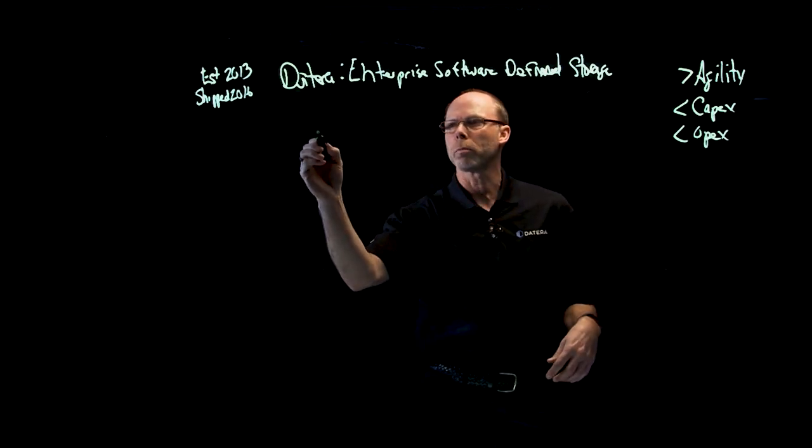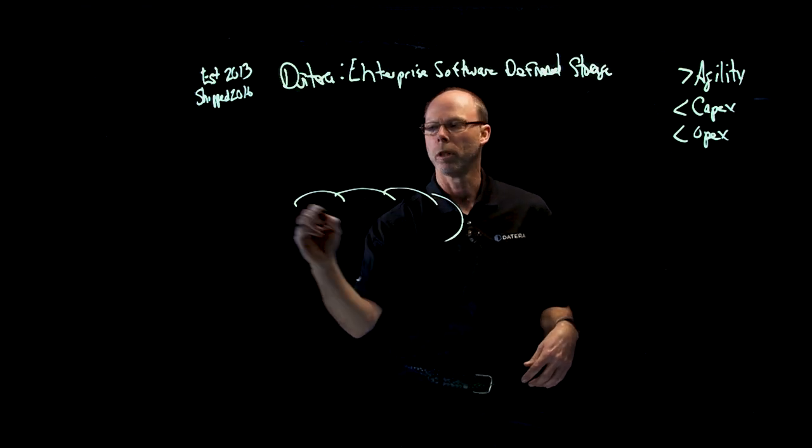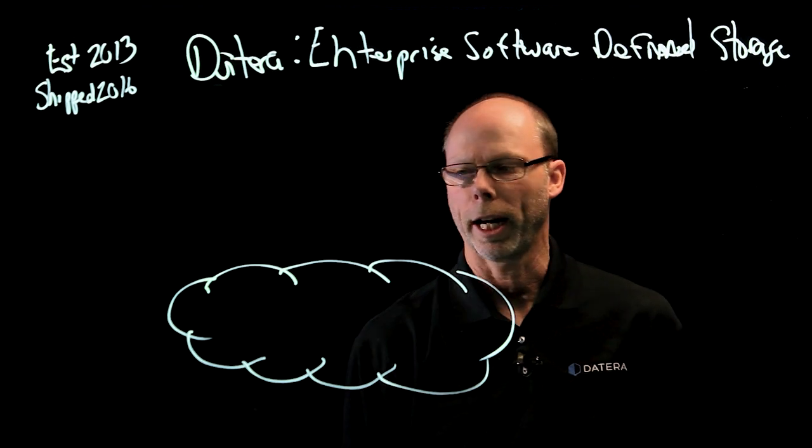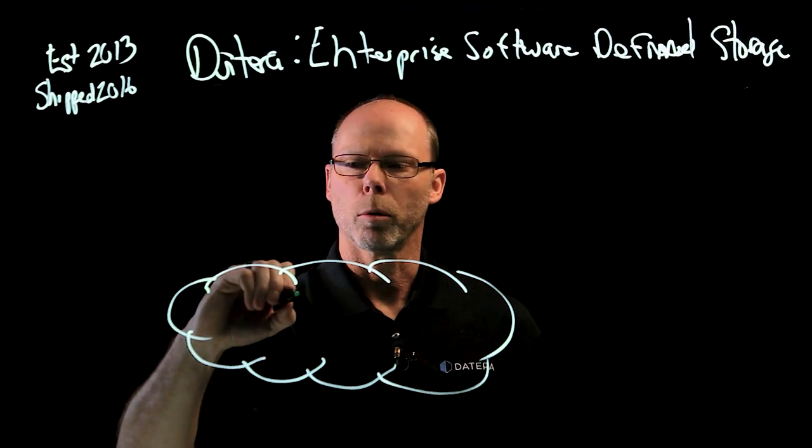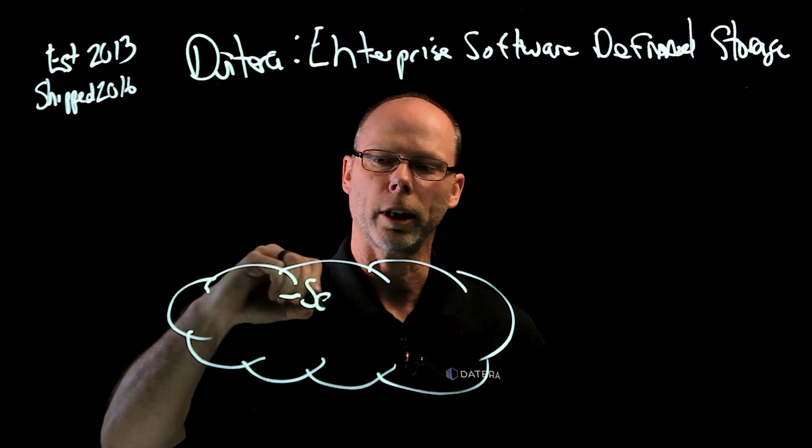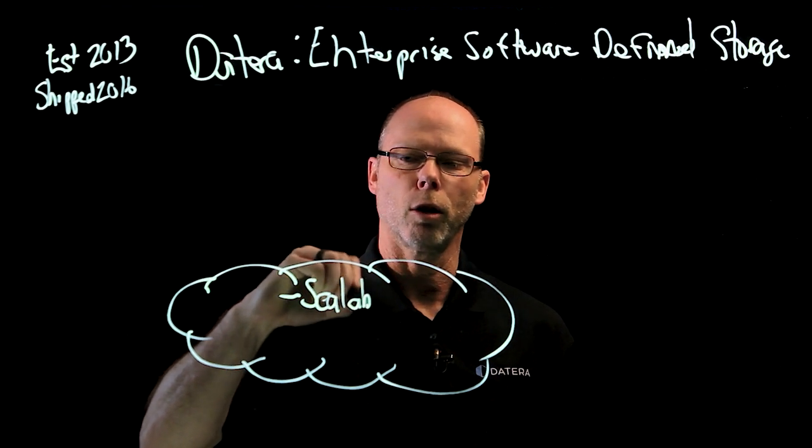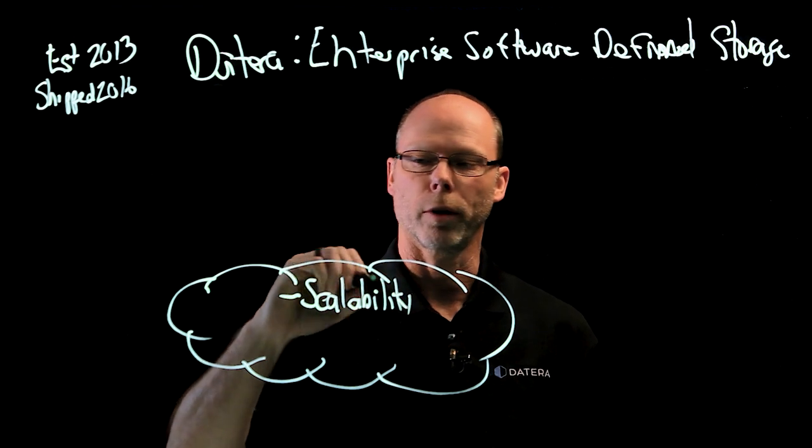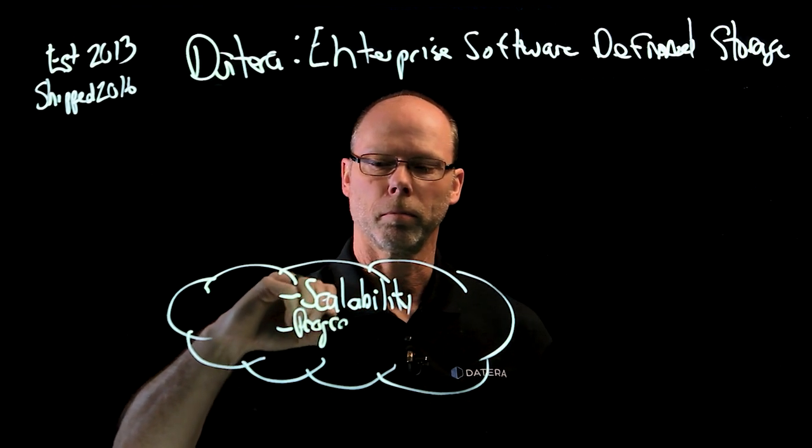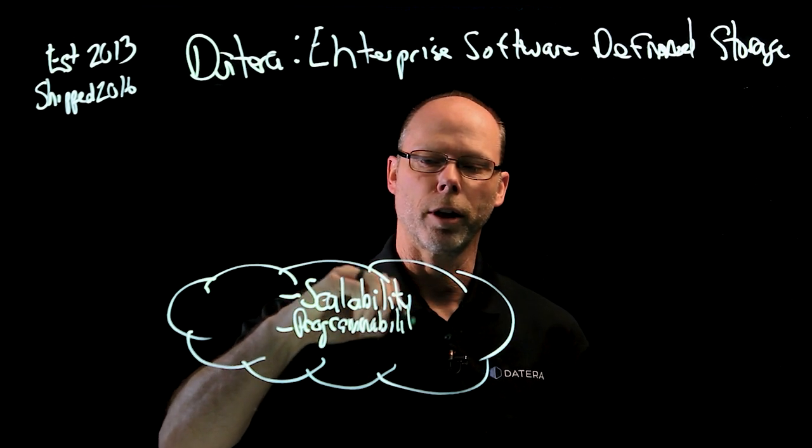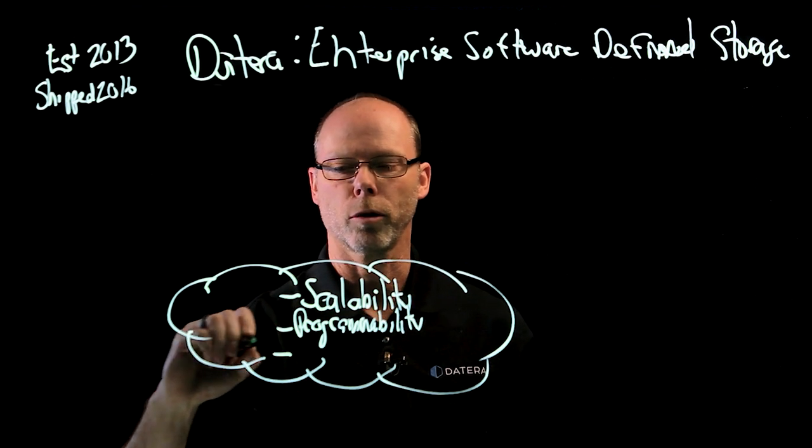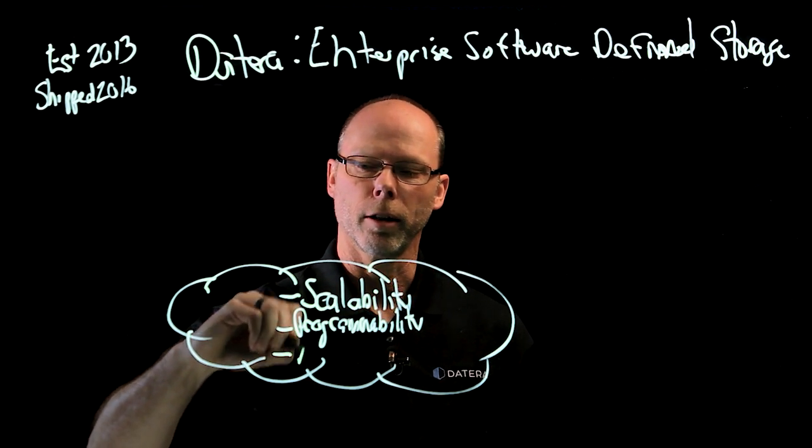When the founders met in 2013, they recognized a significant transformation going on in the IT industry. There were three key attributes of this transformation that we targeted. First is scalability, the need to go from very small to very large very quickly. Programmability, this is the notion that rather than interfacing through the system through graphical user interfaces, we interface through APIs.